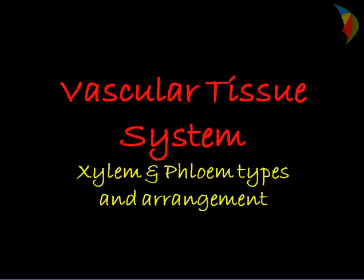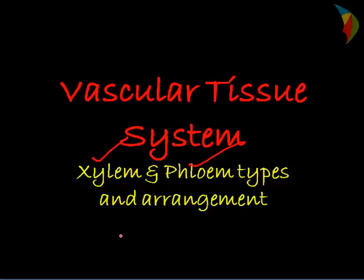Hello friends. Today we will discuss the vascular tissue system, or vascular bundles, which consist of xylem and phloem types of tissue. The xylem and phloem occur as a discrete strand, and that is called a vascular bundle. We will discuss the types of vascular system and different arrangements of xylem and phloem in plants.